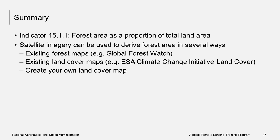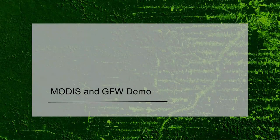In summary, satellite imagery can be used to get information about forest area for Indicator 15.1.1. There are many existing land cover and forest maps derived from satellite imagery, or you can create your own land cover map using a classification approach of your choice. Next, Amber McCollum will be doing demonstrations of how to access and visualize MODIS land cover data.